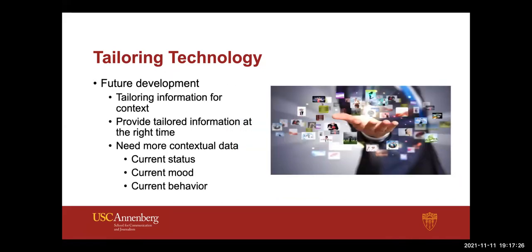Of all of the ones I'm going to talk about tonight, tailoring technology is the one you'll spend the most time thinking about for the future of your digital social media career. The idea of just-in-time information delivered by an algorithm based on your mood, your behavior, your status, what you've been posting, what you like — this is what the algorithms are seeking to do. In 2022, digital social media algorithms are spending the most time figuring out how to customize content to make you feel like everything you're experiencing is individual, when in fact it's mass produced.